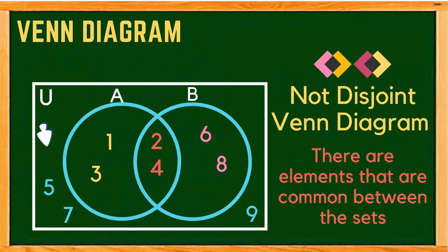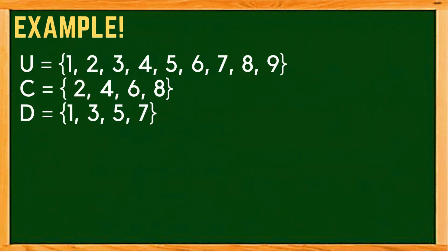Let us have another example. Again, the universal set is given by the counting numbers less than 10. This time, we have set C composed of even counting numbers less than 10 — which are 2, 4, 6, and 8 — and set D consisting of 1, 3, 5, and 7.